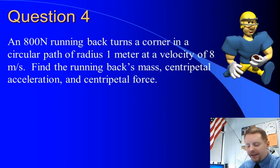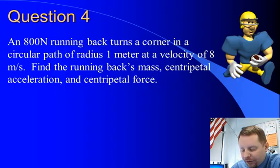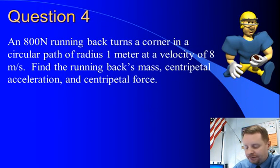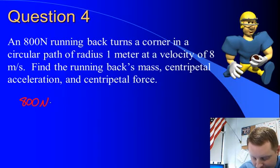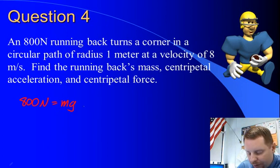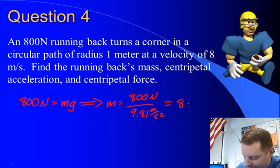Looking at question four: we have an eight hundred Newton running back turning a corner in a circular path of radius one meter at a velocity of eight meters per second. Find the running back's mass, centripetal acceleration, and centripetal force. The weight is eight hundred Newtons, which equals MG. So mass equals eight hundred Newtons divided by 9.81 meters per second squared, for a total mass of about 81.5 kilograms.